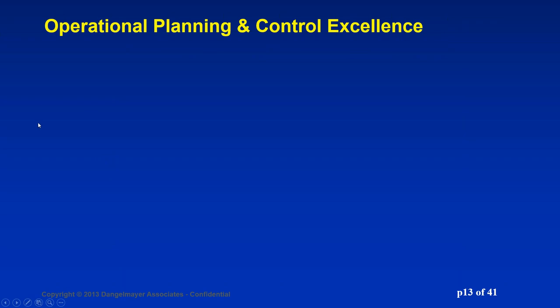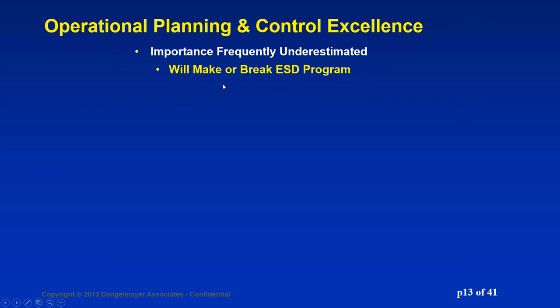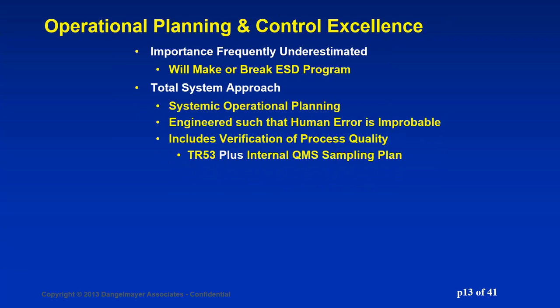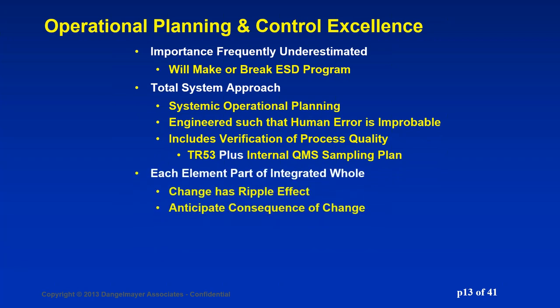What do we mean by operational planning and control excellence? As I said, this is frequently underestimated, and it will literally make or break your program. I tried many different ways of doing this and eventually found the path that works — we were able to get nearly perfect compliance throughout the building and company. It requires a total system approach where you look at all the pieces. Each part is part of an integrated whole: if you make a change in one area, it has a ripple effect elsewhere. It needs to be done such that human error is improbable — engineer the process so that the most convenient way to do what you want them to do is the way they're going to want to do it. And you have to verify process quality.